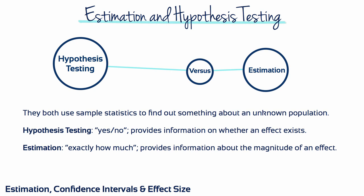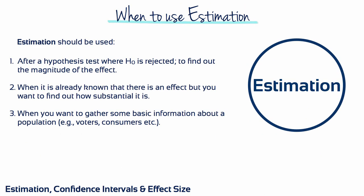Hypothesis testing and estimation both use sample statistics to find something out about an unknown population. Hypothesis testing provides yes-no information on whether an effect exists, whereas estimation provides information about the magnitude of an effect. Estimation should be used after a hypothesis test where the null hypothesis has been rejected to find out the magnitude of the effect, or when it's already known that there's an effect but you want to find out how substantial it is, or when you want to gather some basic information about a population.